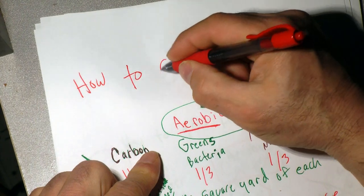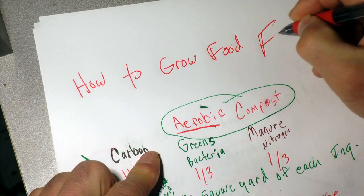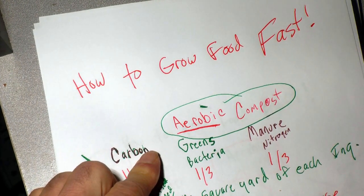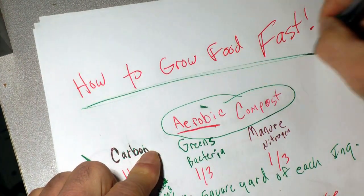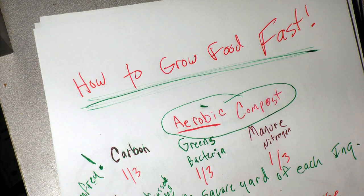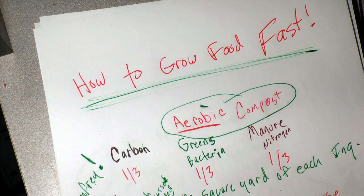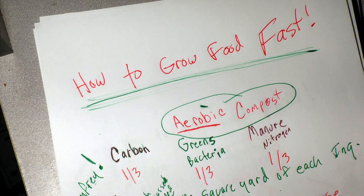So that's how to grow food fast. I've given you the idea of how to do it and I'll link the videos in the description. I wish you luck, because I think we've got a lot of problems coming. The faster you get yourself down to the bottom — which is actually in the soil, growing food — the faster you're going to be able to start your trajectory back up to a successful, happy life. Thanks for watching.